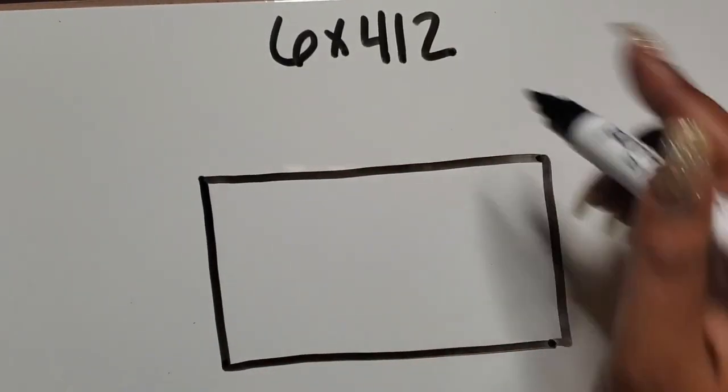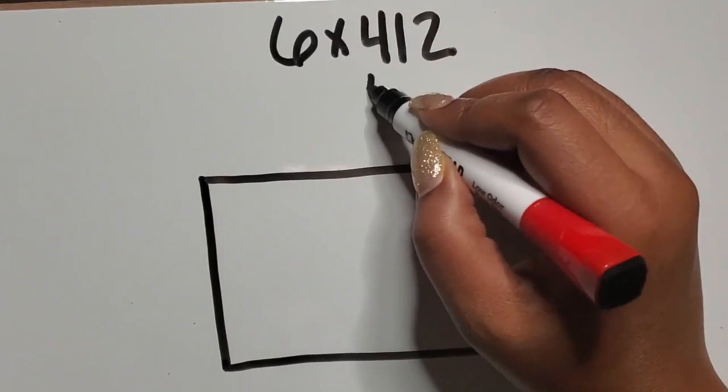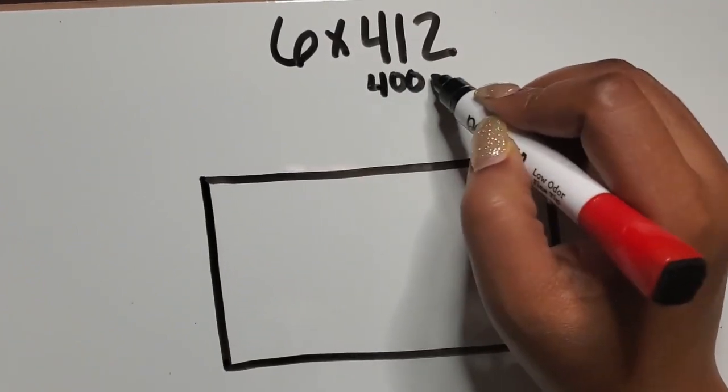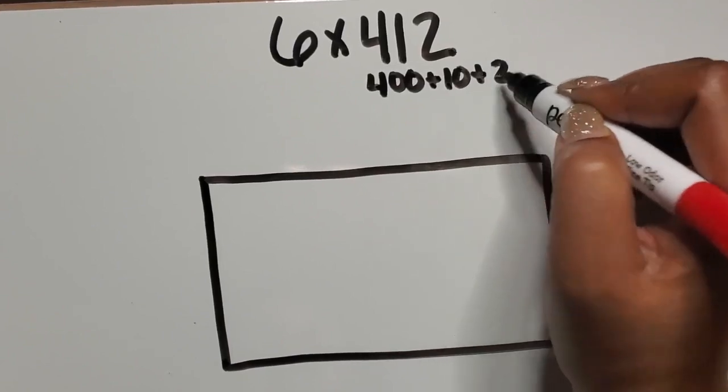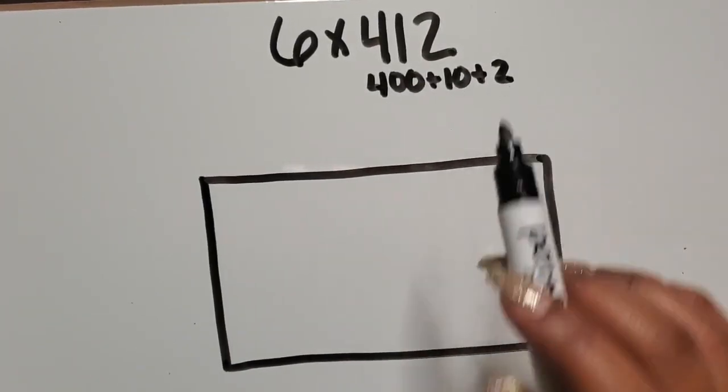So there will be 412. I'm going to decompose the 412 into 400 plus 10 plus 2 to represent the hundreds, tens, and ones.